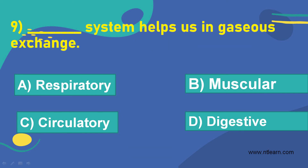Let's move on to the next question. The blank system helps us in gaseous exchange. Option A: respiratory. Option B: muscular. Option C: circulatory. Option D: digestive.